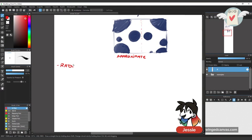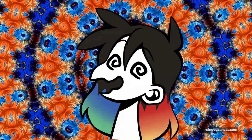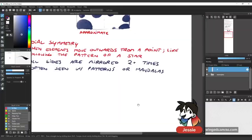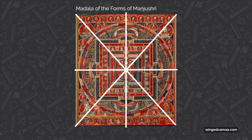Radial symmetry is when your elements move outwards from a point, like following the pattern of a star. You start from one central point — though some people start from a corner or slightly off center for variety. Everything tends to move outwards and creates an almost circular, spiral-like pattern around that center point. All sides are mirrored more than two times. With biaxal you only have horizontal and vertical mirroring; with radial symmetry it's more than that. The Mandala of the Forms of Manjushri from the Metropolitan Museum of Art, from Tibetan culture dating to the late 14th century, is an example of perfect radial symmetry — it can be split horizontally, vertically, and diagonally into eight different sections that mirror almost exactly.